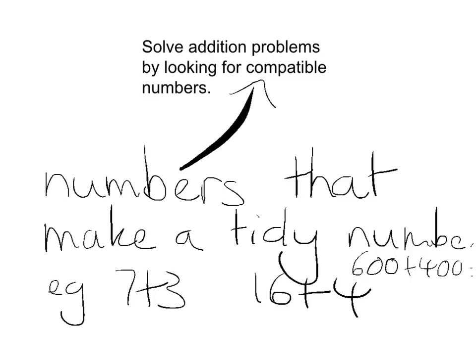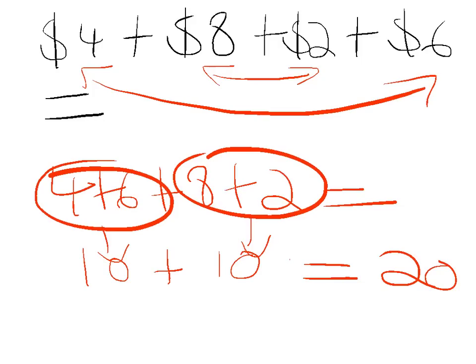Let's look at an example together. In front of you we have four dollars plus eight dollars plus two dollars plus six dollars. So very quickly we can see, and you can see with the arrows indicated underneath here, that four plus six we've identified as being compatible because they're 10, and then eight plus two which is 10.